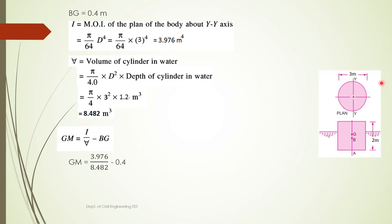Substituting all values into GM = I / V̄ − BG: I = 3.976 m⁴, V̄ = 8.482 m³, BG = 0.4 m, giving GM = 0.069 meters. Since the metacentric height is positive, the body is stable. This is how we solve this type of problem.